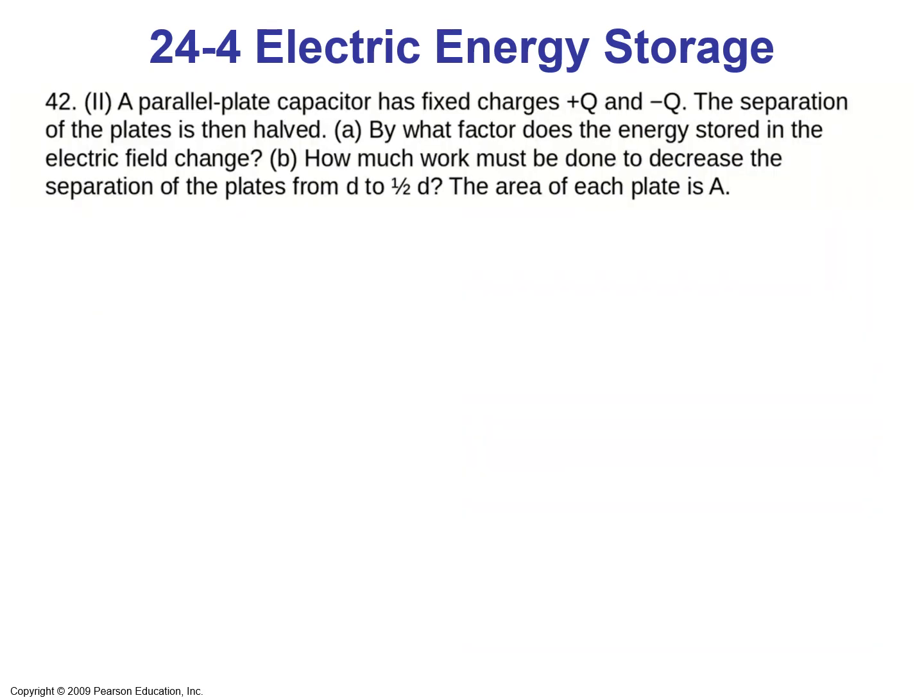Let's look at problem number 42 from the book. A parallel plate capacitor has fixed charges +Q and −Q. The separation of the plates is then halved. (A) By what factor does the energy stored in the electric field change, and (B) how much work must be done to decrease the separation from d to d/2? The area of each plate is assumed to be constant.